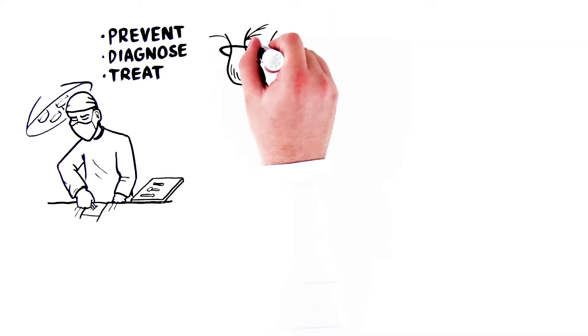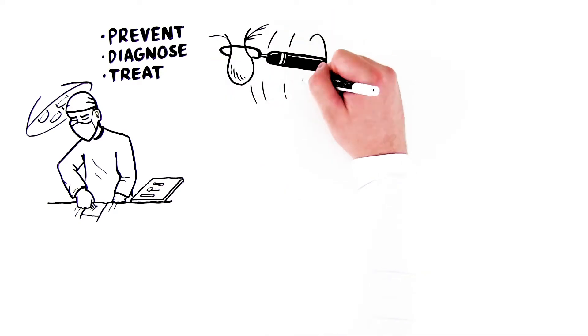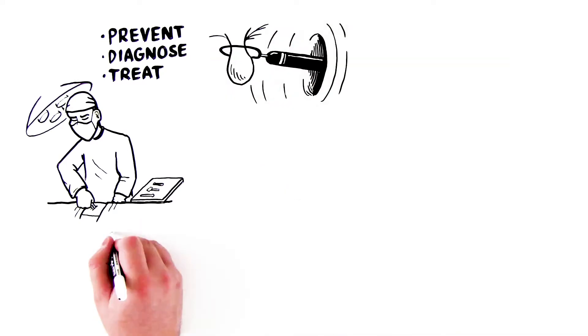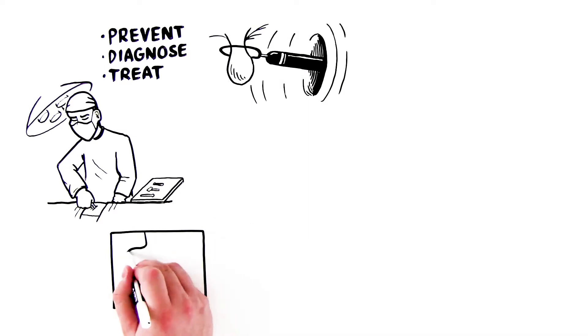Surgery can prevent some cancers by removing a polyp or lesion that's likely to become cancer, or by removing part of the body when a person has a high risk of getting cancer there, even when there aren't yet signs of it starting.